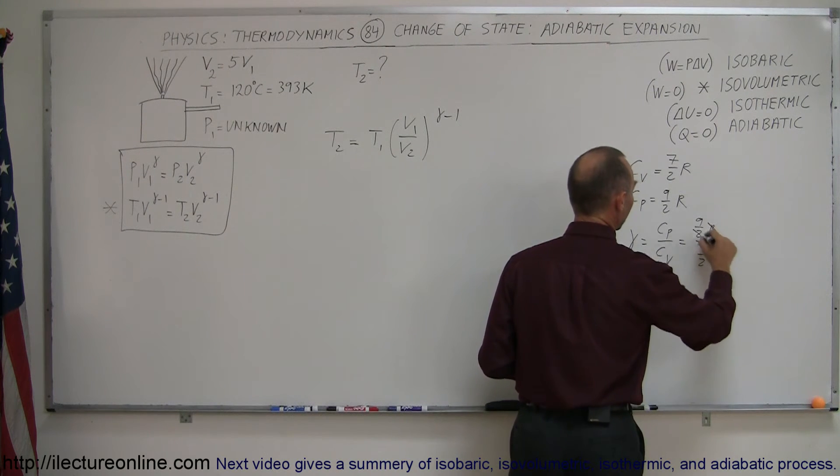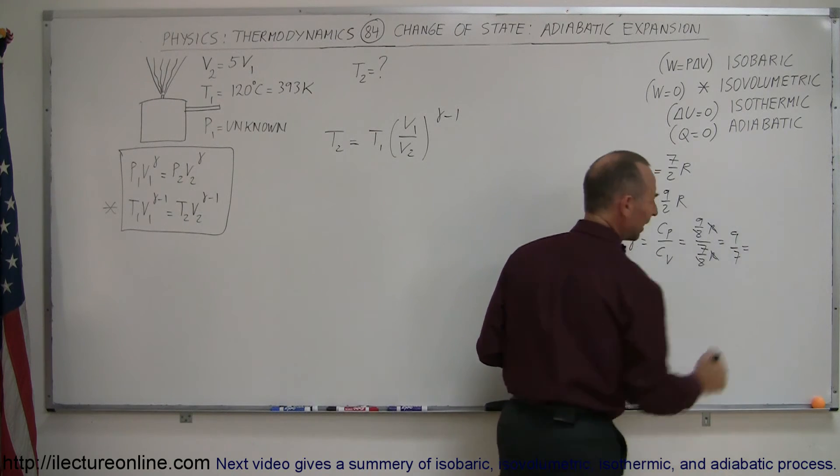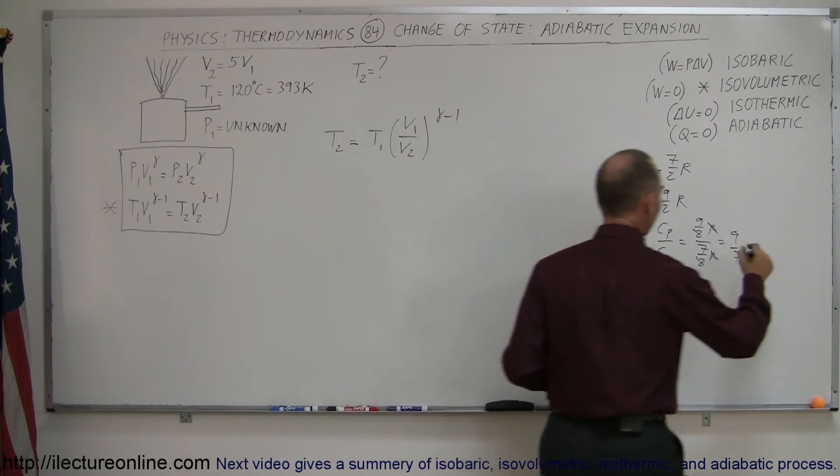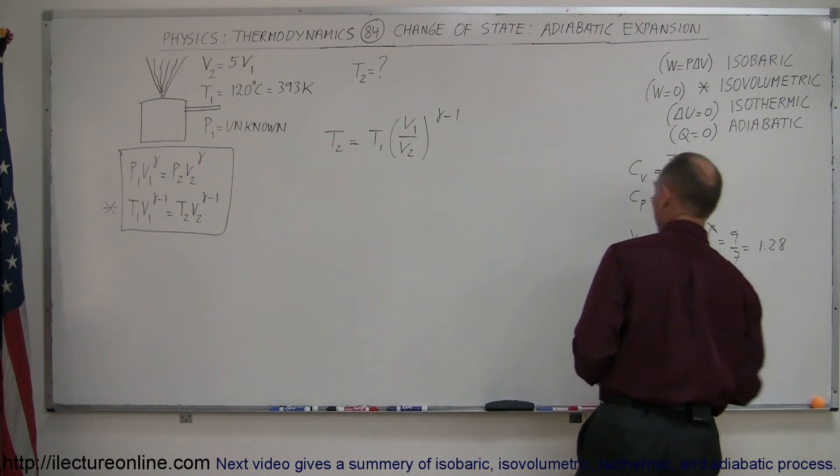which in this case is 9 over 2R divided by 7 over 2R, and so the Rs cancel, the 2s cancel, that's 9 over 7, and let's see, that's I think 1.28 if I'm not mistaken, close enough, 1.28, there we go, alright,